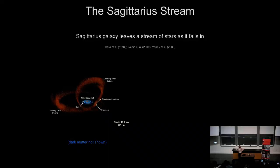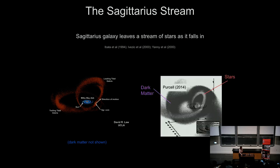This galaxy hasn't been fully digested, so we're seeing its remnants in the process of disruption. The movie I showed you only shows the stars, but you can do these simulations and also see where the dark matter ends up. This is an image from one of these simulations — the Sagittarius merger. Stars are shown in light gray and dark matter in dark gray. As you can see, there isn't a perfect one-to-one correspondence, but overall the dark matter seems to roughly trace what the stars are doing.